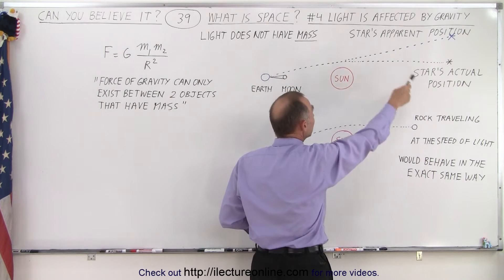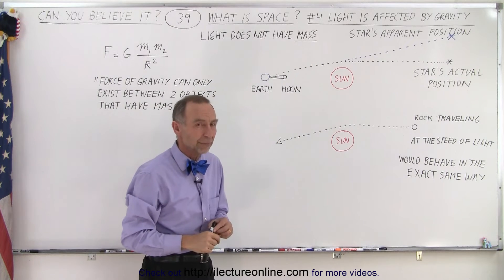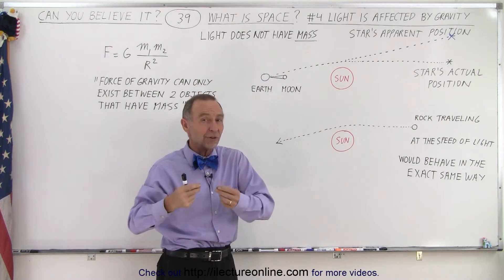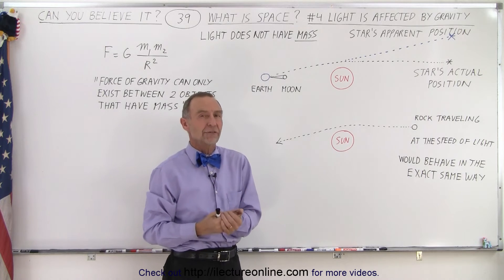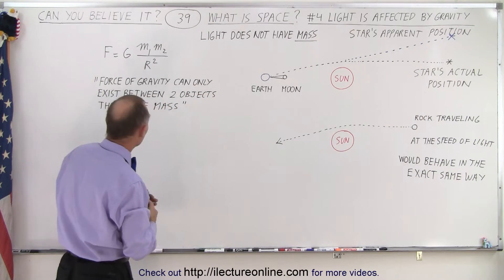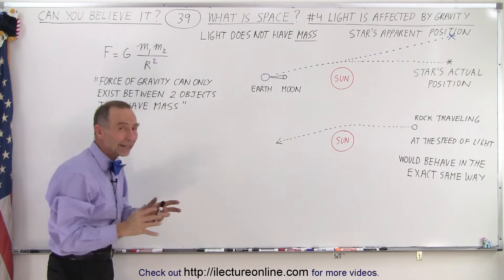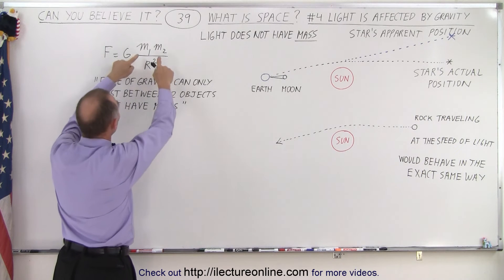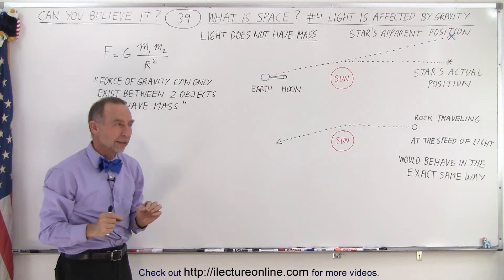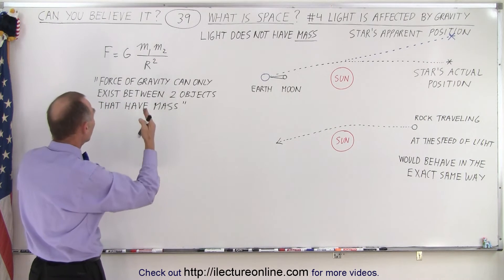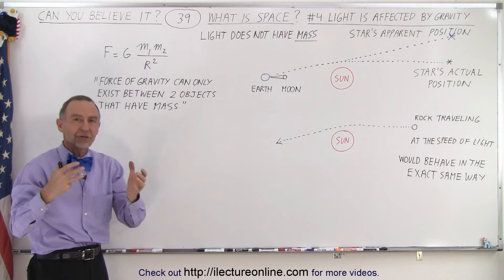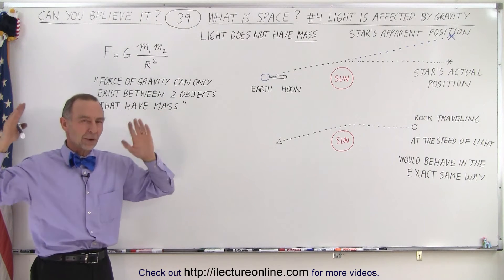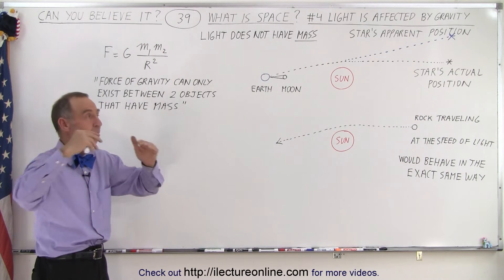Einstein even predicted how much the difference in position would be on the picture — absolutely amazing! How did he know how much light would bend? Well, he assumed that light was affected by gravity just like any other object. Now that seemed rather impossible because Newton, several centuries before, had discovered the equation of gravity, concluding that the force between any two objects was equal to the product of the masses of the two objects. So therefore you cannot have gravity if one of the objects doesn't have mass. Since light does not have mass, the conclusion was that Einstein was completely wrong — there was no way that light could be affected by gravity.